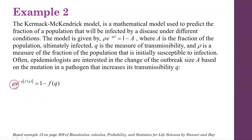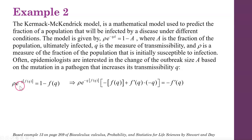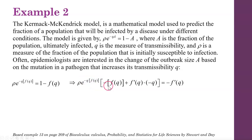When we take the derivative of rho e to the negative q times f(q), we need to use the chain rule, and within that, we need to use the product rule for the product in the exponent. On the right side, the derivative of 1 is 0 and the derivative of f(q) is f prime of q, giving negative f prime of q. The derivative of e to something remains e to the same thing, then the chain rule requires taking the derivative of the exponent using the product rule: derivative of negative q is negative 1, multiplied by f(q), plus f prime of q times negative q.